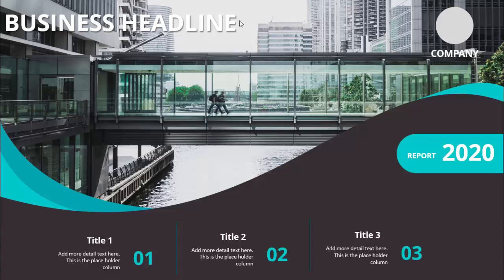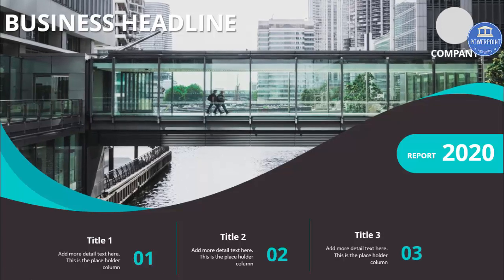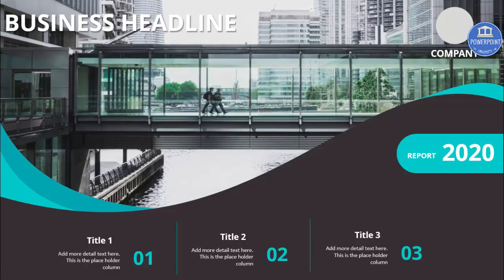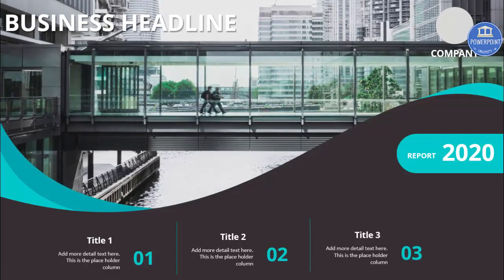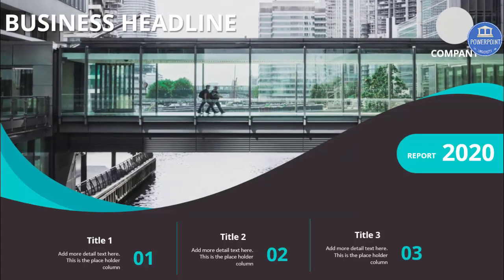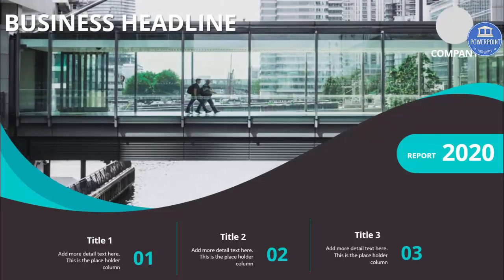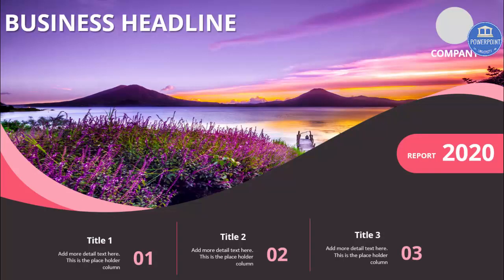On the left side I've given the main title as a business headline, and I've added a small animation to it. When I click, you can see this particular image is slowly zooming in — this gives a very good effect in the presentation. Similarly, I've made one more slide where I used a different image and different colors based on it, just to give you an idea of what you can do with this slide.